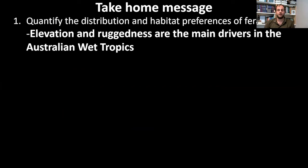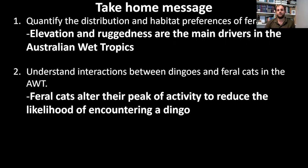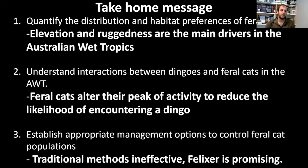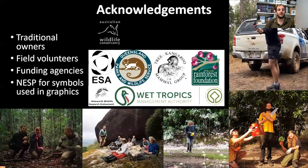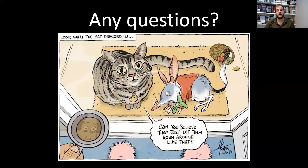In conclusion: feral cats are found throughout the Wet Tropics with elevation and terrain ruggedness as their main drivers; dingoes don't represent a viable management option, with cats merely shifting their activity peak to reduce dingo encounters; and although traditional trapping methods are currently ineffective, the Felixer looks like a promising alternative, with further efficacy analysis to follow. I'd like to acknowledge the traditional owners of my field sites, thank my field volunteers, funding agencies, and the NESP for symbols used in the graphics. Thank you for listening.